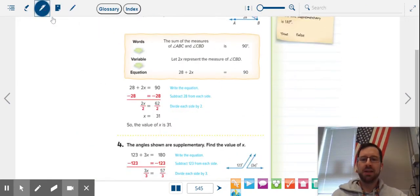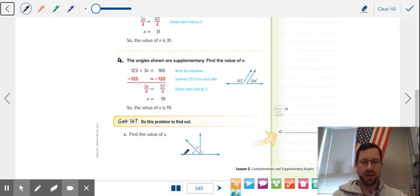All right, we're on the next page. If you ever need to find the missing measure, in this case we have angles that add up to a line. So that means they are supplementary, 180.